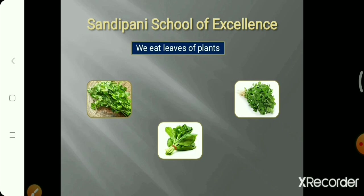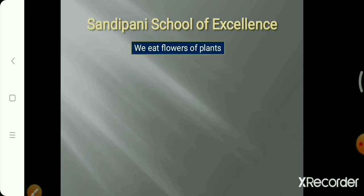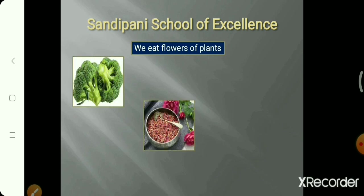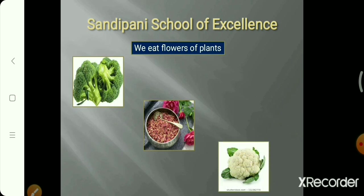Some leaves are also used in medicines, like basil leaves and neem leaves — they are used in many medicines and remedies. We also eat the flowers of some plants — like broccoli, rose, and cauliflower. These are the flower parts of plants.